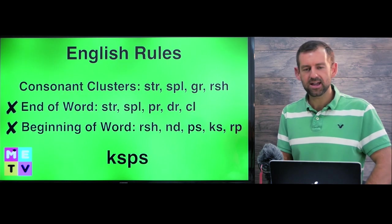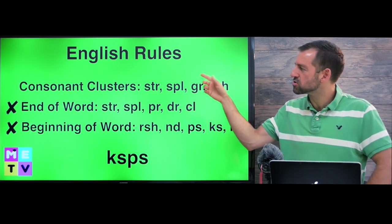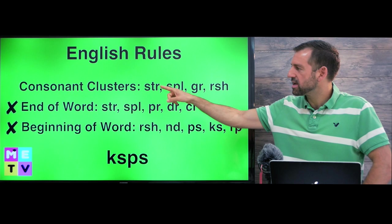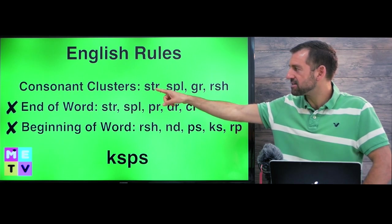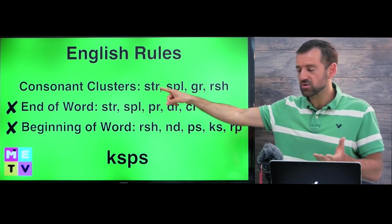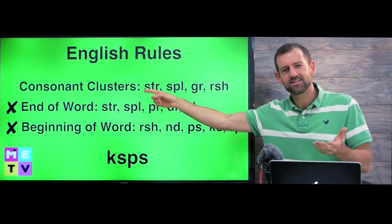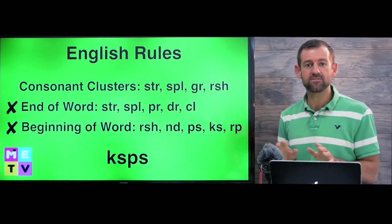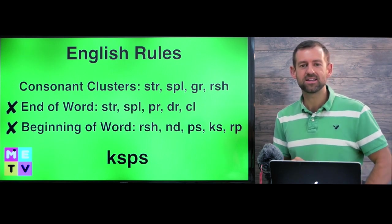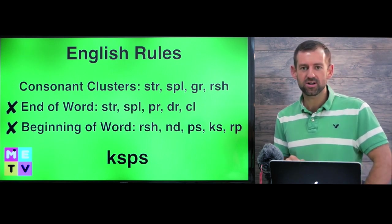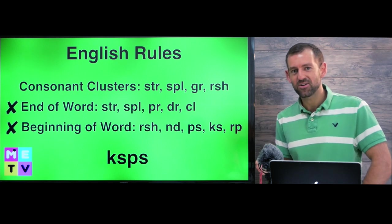So let's take a look at an example of some English rules. So in English we can have consonant clusters. These are called consonant clusters. What's a consonant? Well, in English we have 26 letters, right? A, B, C, D, E, F, G, H, I, J, K, L, M, N, O, P, Q, R, S, T, U, V, W, X, Y, Z.